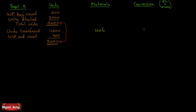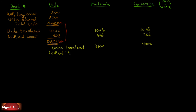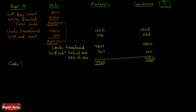Of the 4,800 units transferred, they have 100% of materials and 100% of conversion costs. For the 400 units remaining on the line, management estimates 40% of material costs and 25% of conversion costs have been incurred. So for materials: 4,800 + (40% × 400) = 4,800 + 160 = 4,960 equivalent units. For conversion: 4,800 + (25% × 400) = 4,800 + 100 = 4,900 equivalent units. They're different numbers — and that's expected, because we separate by cost.